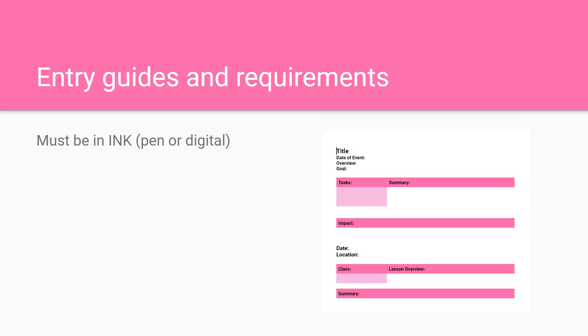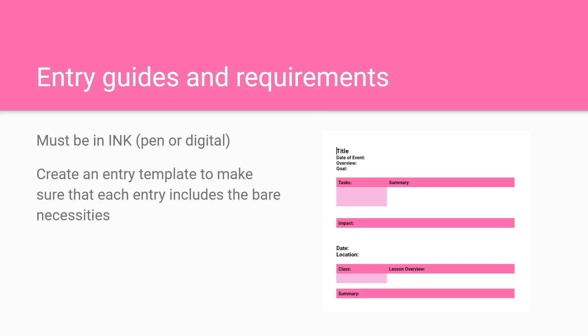Starting with entry guides and requirements: your entry must be written in ink, which means either writing it using a pen or making it digitally and then printing it out. This is a rule and you will get marked down if it's written in pencil. It's also useful to create an entry template to make sure that each entry includes the bare necessities. Templates also keep your notebook consistent, readable, and organized.